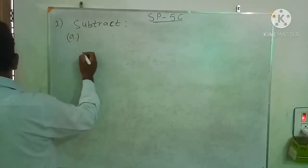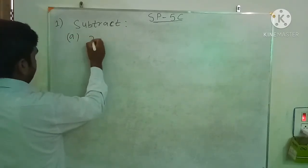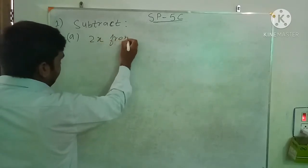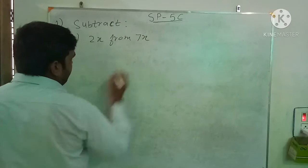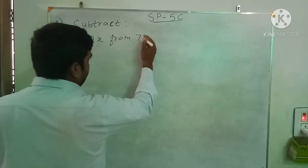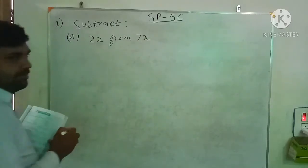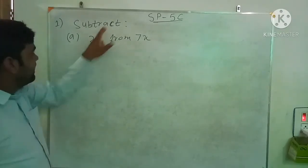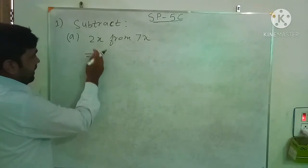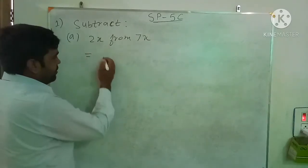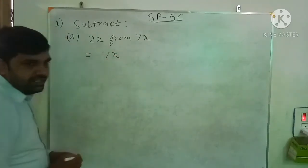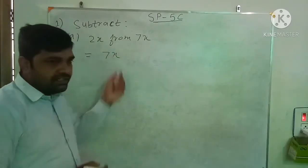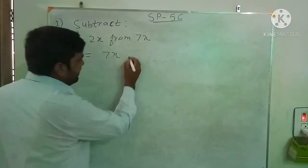Question 1a: subtract 2x from 7x. Understand the meaning — subtraction means take away, that is minus. So we have to subtract 2x from 7x. The number written after 'from' is written first. After that you put the subtract symbol, that is minus.